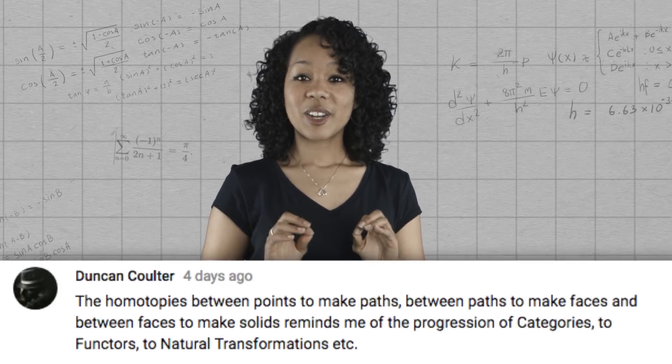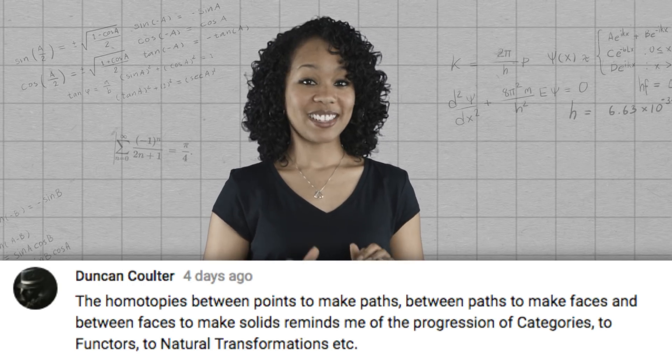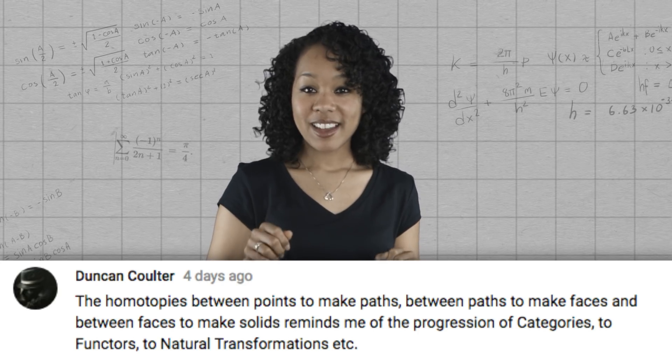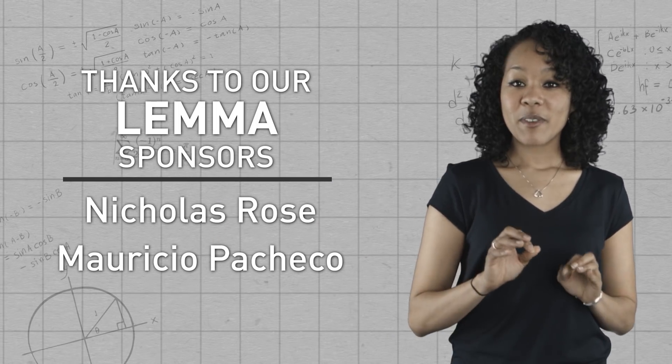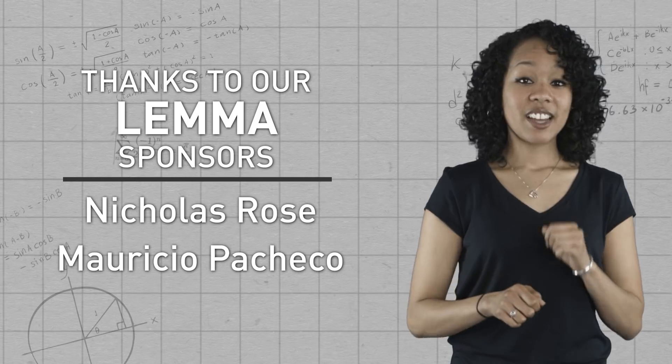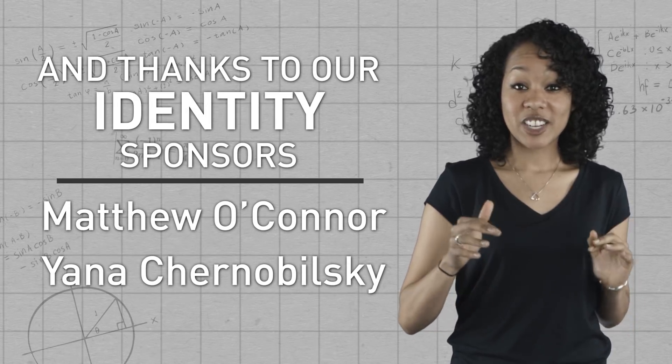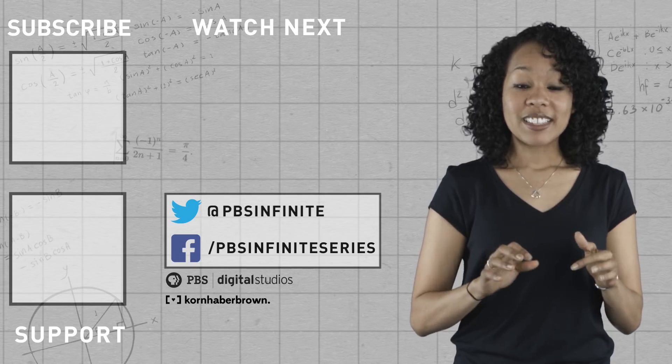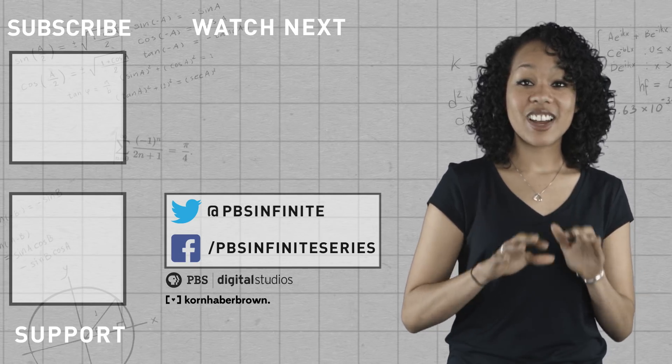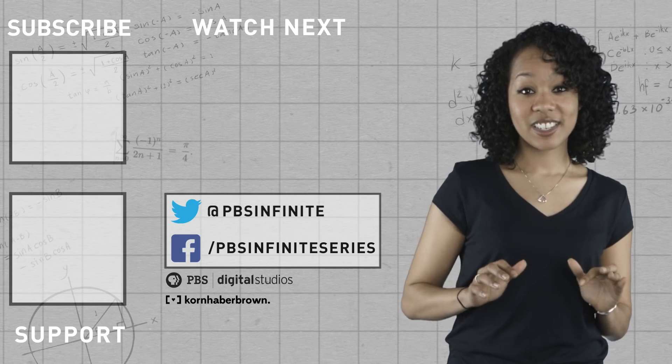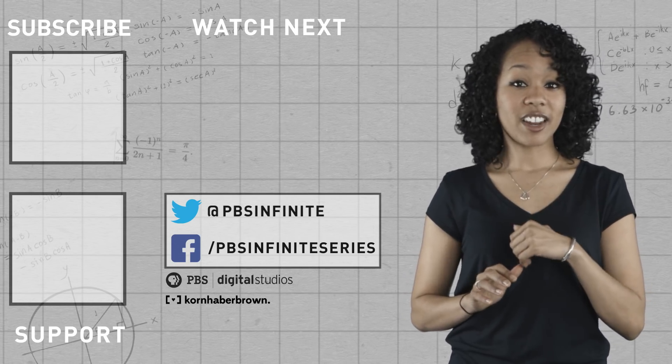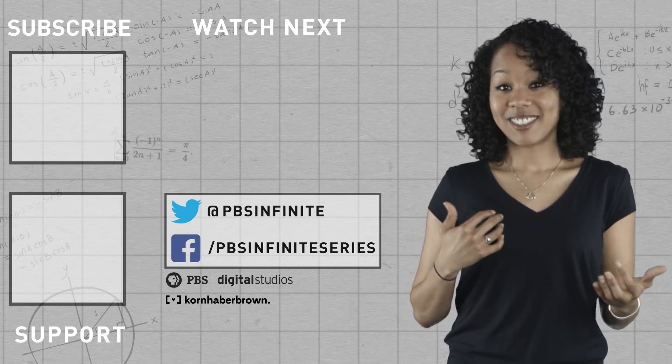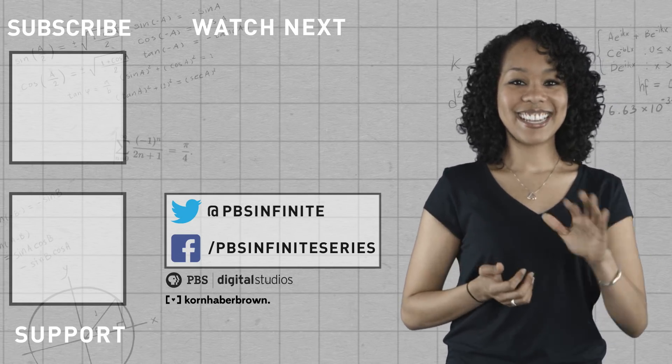Lastly, Duncan Coulter made a cool observation about some advanced math. This idea of paths between paths between paths may remind some of you of the progression from categories to functors to natural transformations and so on. And rightly so. This infinite string of paths between paths is precisely the idea that underlies infinity categories. So a narco who said, don't think we don't see you trying to sneak in higher category theory, lol. Well, I'm guilty as charged, lol. See you next time.